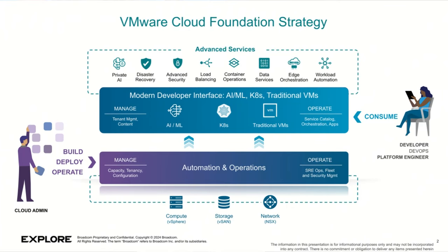This next slide shows VMware Cloud Foundation strategy. We've been talking all week about going all-in — this is really where the value rubber meets the road. The fundamental premise is that if you buy into the full package — the full stack of compute, storage, networking, automation, all the developer interfaces, containers, ML and AI tooling, and on top of that all the advanced services like private AI, DR, live recovery, advanced security, all the data services — that's the full package. And if you lean into that, then you're going to have the best TCO.